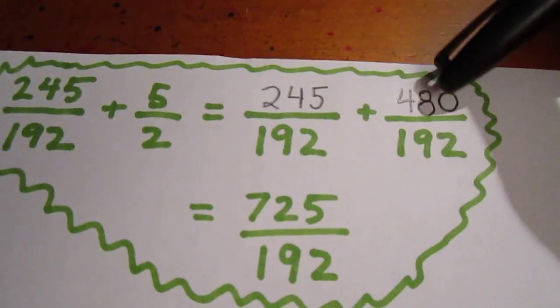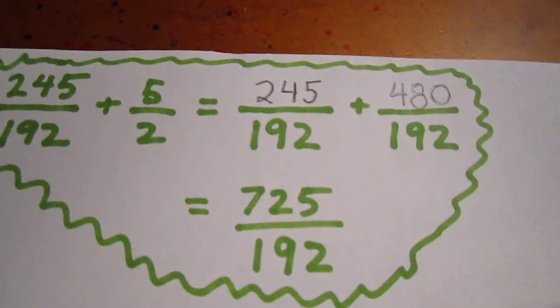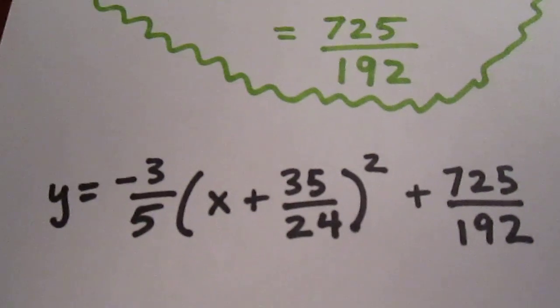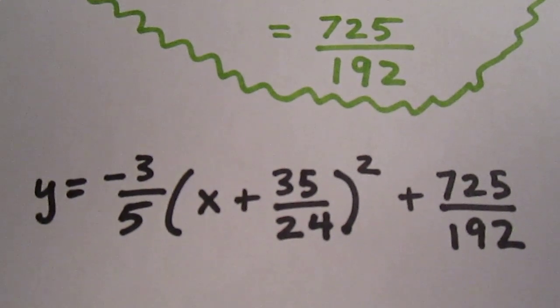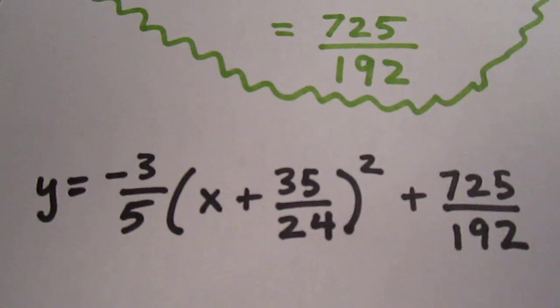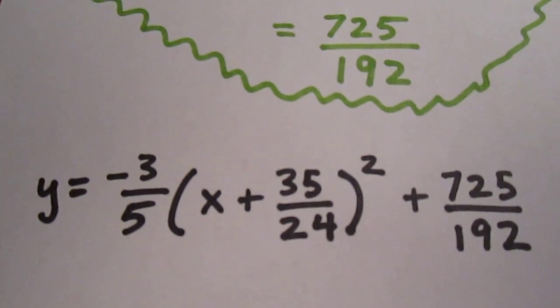And when I add the 245 and the 480, I get 725. And so, what we really have is negative 3 fifths times x plus 35 over 24 quantity squared plus 725 over 192.